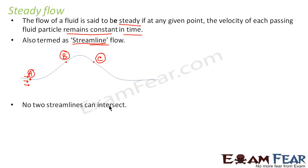Another important point about streamline is no two streamlines can intersect. That means two streamlines can never intersect. What will happen if two streamlines intersect? A streamline is nothing but a path which is followed by a fluid particle.